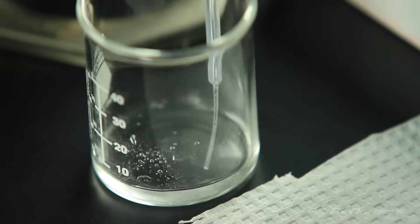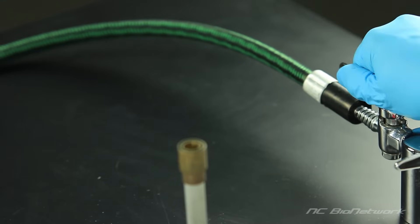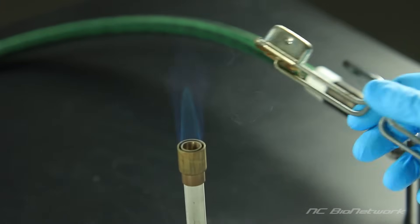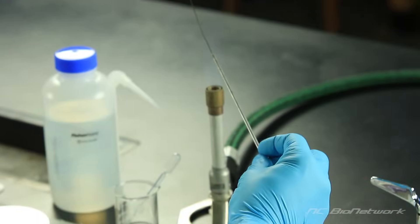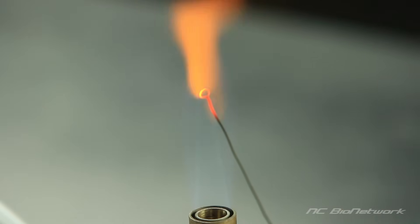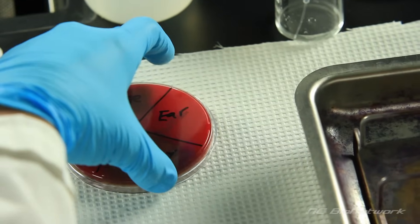Add a drop of distilled water to the slide. Sterilize an inoculating loop by passing it through the flame of a Bunsen burner. When the loop is cool,